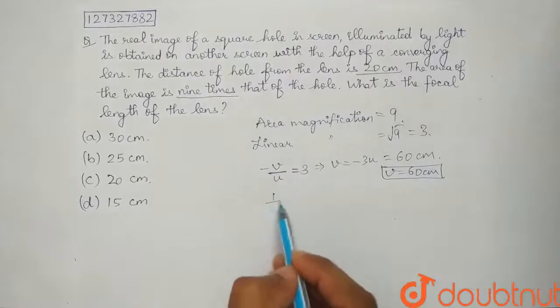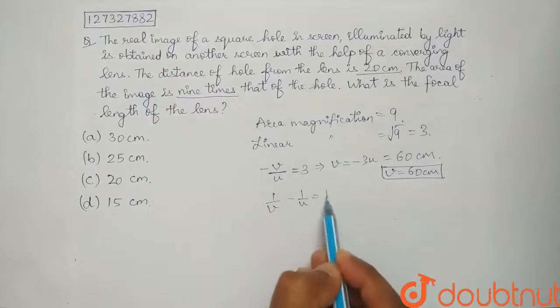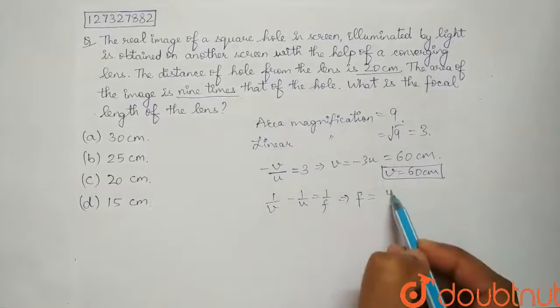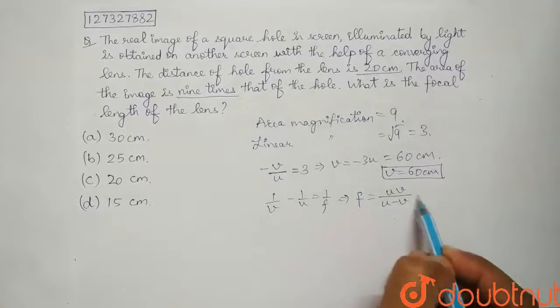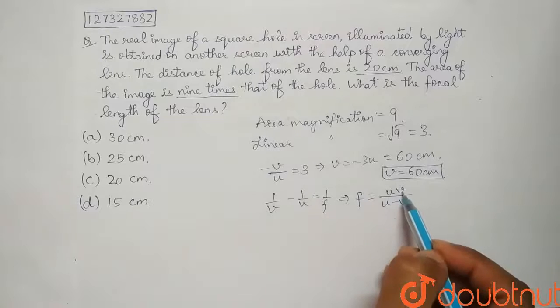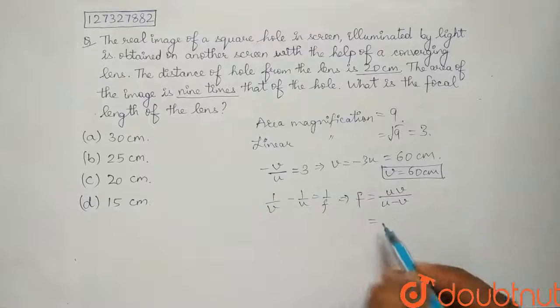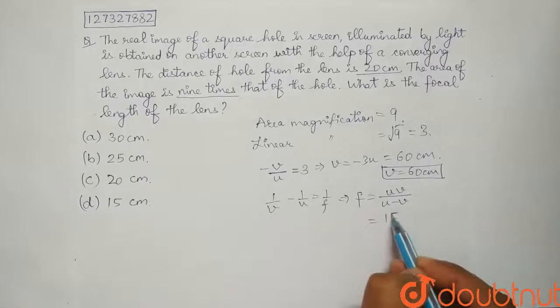Now we have the formula that 1 by V minus 1 by U equals 1 by F. If we rearrange this, F will be UV by U minus V. Put in the values, U is minus 20, V is 60, minus 20 minus 60, minus 80 will cancel. And then the focal length will be 15 cm.